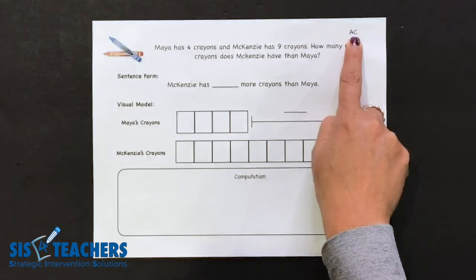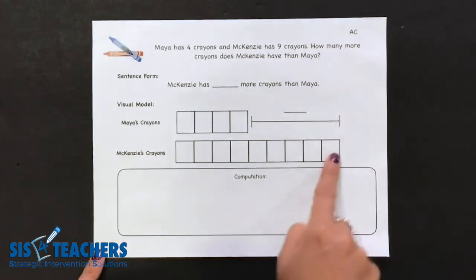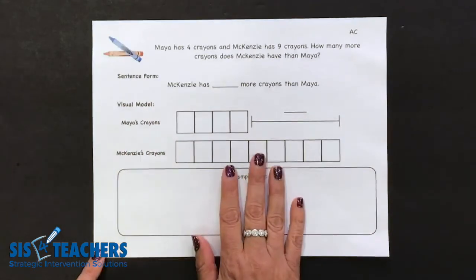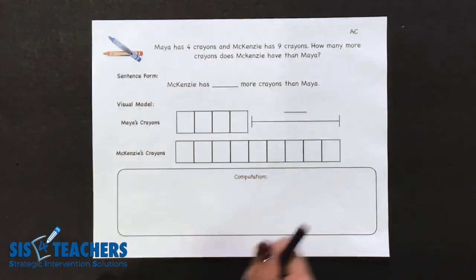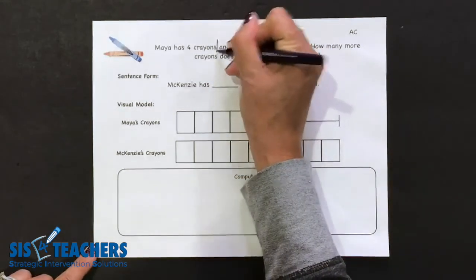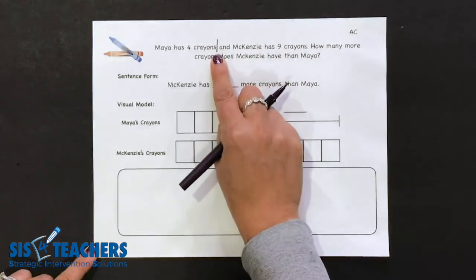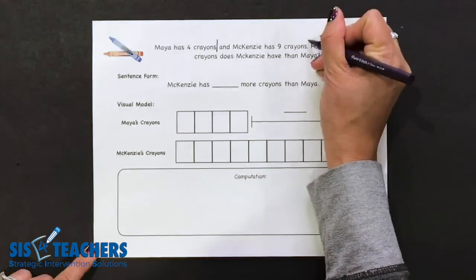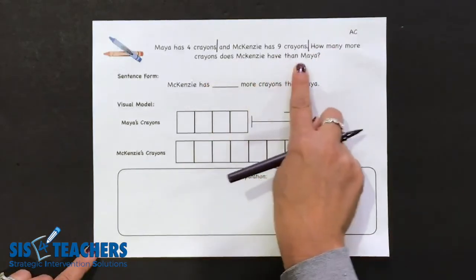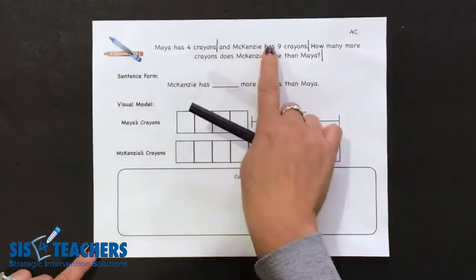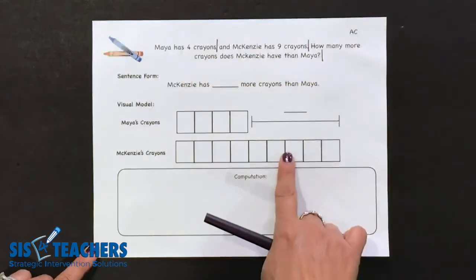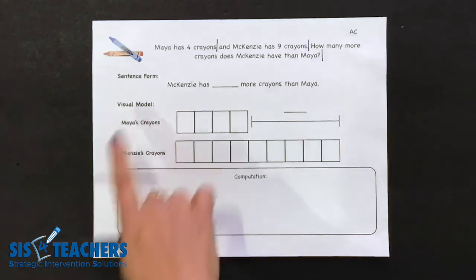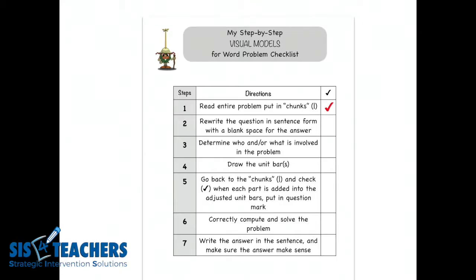That's why it's not in the part-whole family — it's a little bit more complex and is really the whole reason why we start doing visual models, because once you get out of the part-whole family this becomes more difficult. We're going to go back and do our reread, repeating and using our chunks: Maya has four crayons — chunk. Mackenzie has nine crayons — chunk. How many more crayons does Mackenzie have than Maya — chunk. This problem has three pieces of information. We want to later put checks on those as we enter them into our visual model.